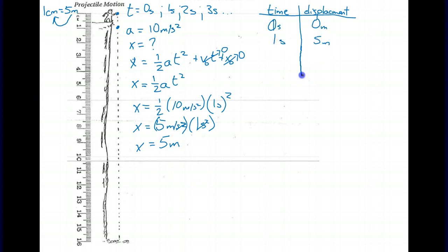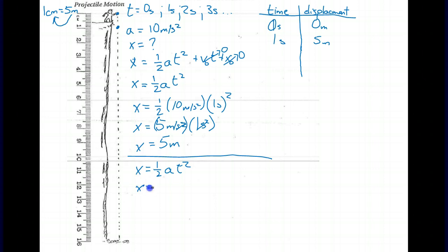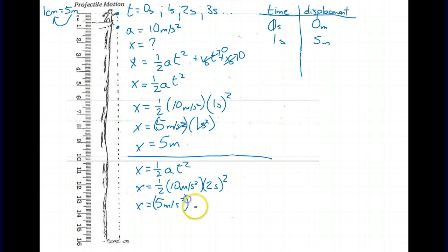Now let's do the next time interval. We use displacement equals one-half at squared again. Half of 10 is 5 — we'll use that 5 quite a bit. Plugging in t equals 2 seconds: 5 times 2 squared equals 5 times 4 equals 20. The seconds squared cancel, giving us 20 meters. At 2 seconds, the ball has fallen 20 meters, drawn as 4 centimeters on our scale.